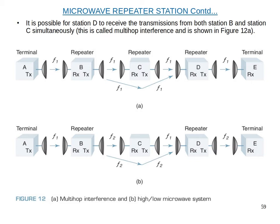There is one interference case where the same frequency arrives at station D from both station C and station B. However, we can separate and remove it because it is the same frequency, so multi-hop interference at station D can be resolved.